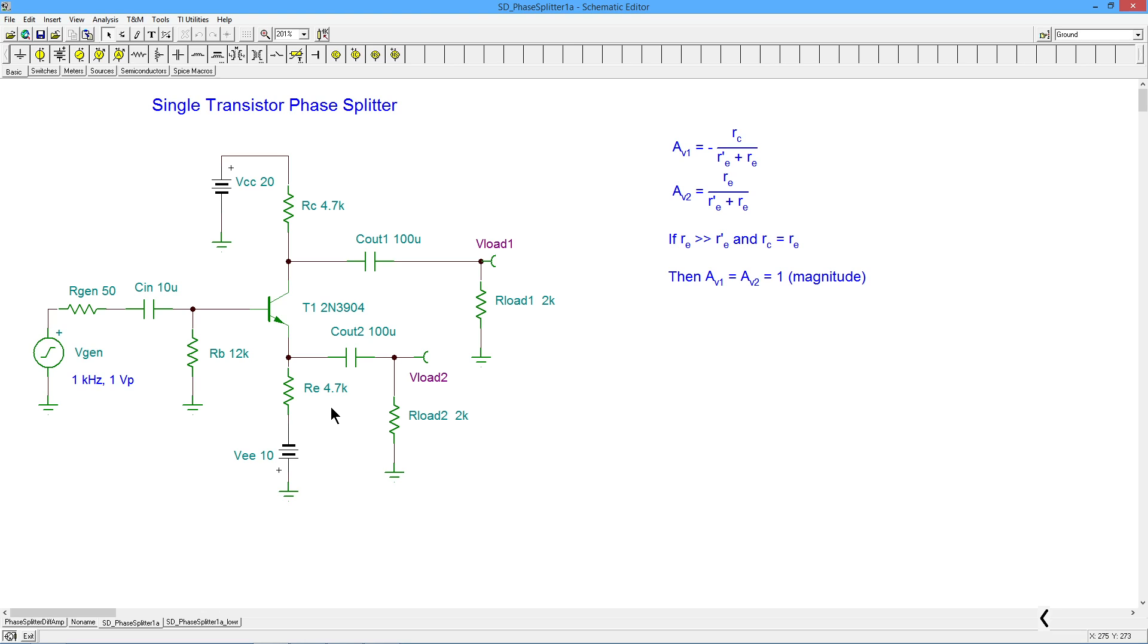So we're going to get maybe 9.2, 9.3 volts across this 4.7k. Divide that out, you're going to get in the vicinity of 2 milliamps, maybe just a smidge less than 2 milliamps. That would give you about a 10 volt, not quite, drop across here. So your collector will be about 10 volts DC. The 2 milliamps would get you about 13 ohms for the R prime.